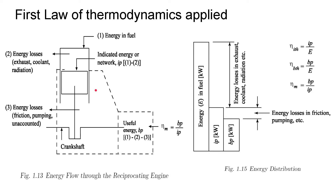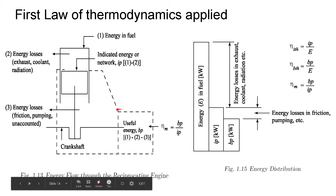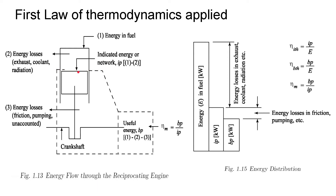This dotted line shows the control volume, which is the inside of the engine. What we are inputting is the energy in the fuel. There are two levels of loss: the first is energy loss due to exhaust, coolant, and radiation — the high-temperature mass leaving the control volume carrying energy with it. The second consists of minor losses: friction loss, pumping loss, and some unaccounted losses.